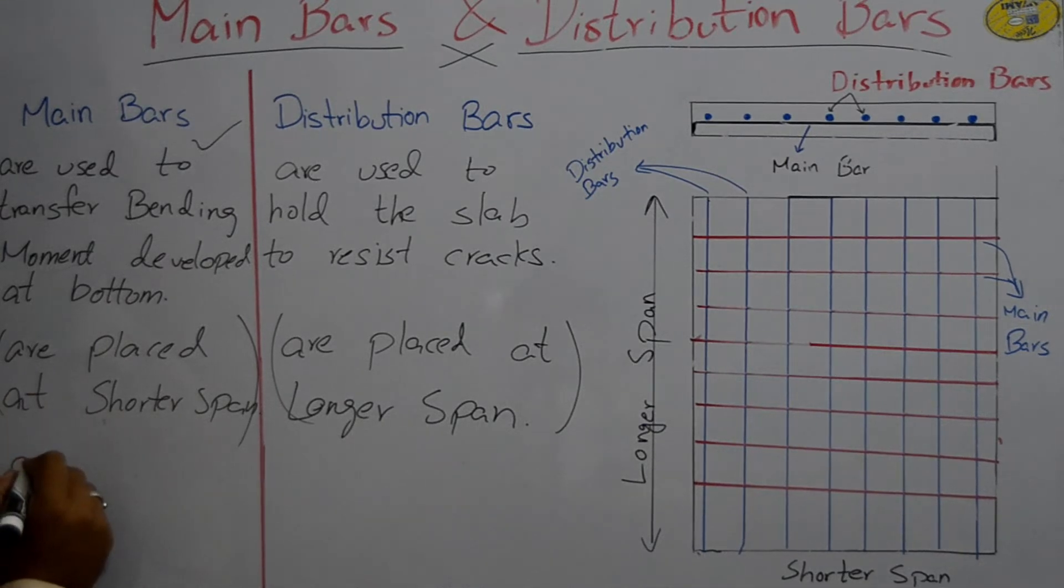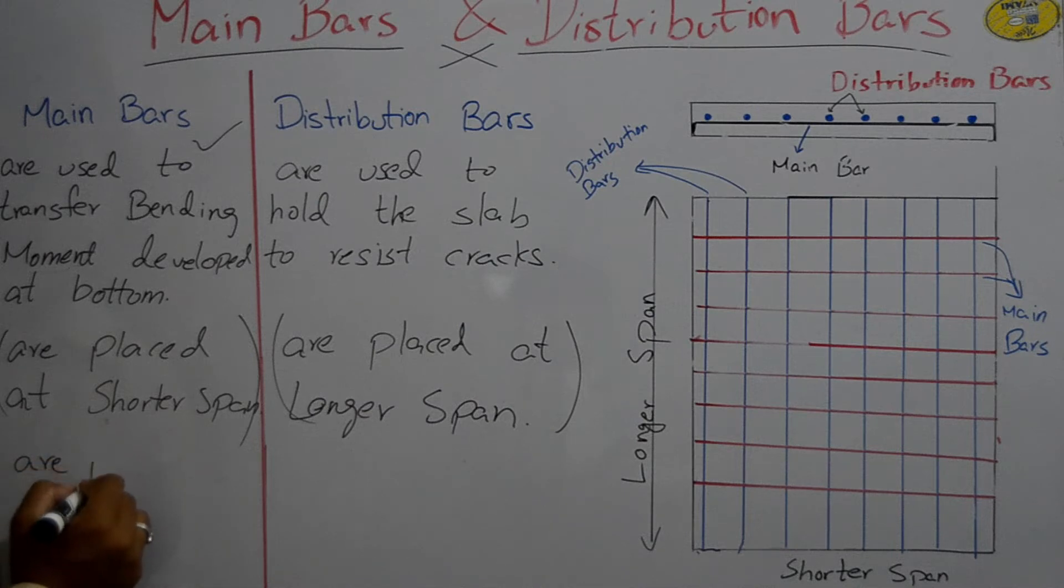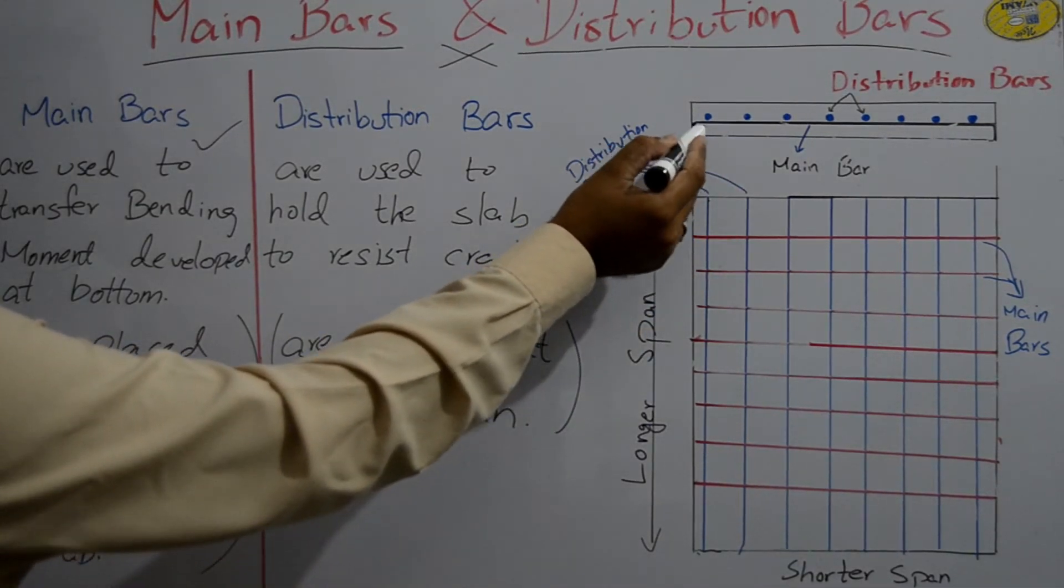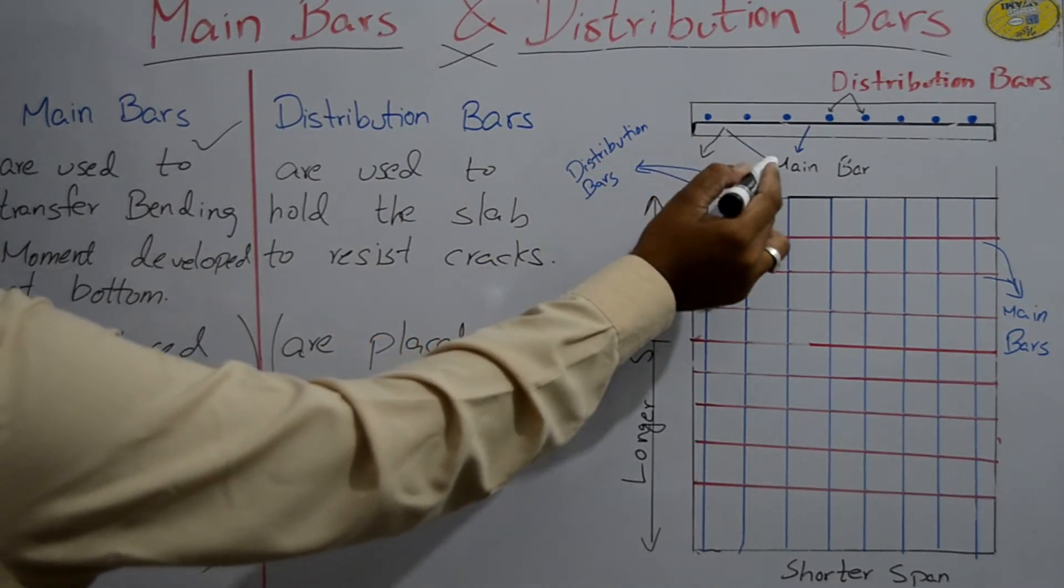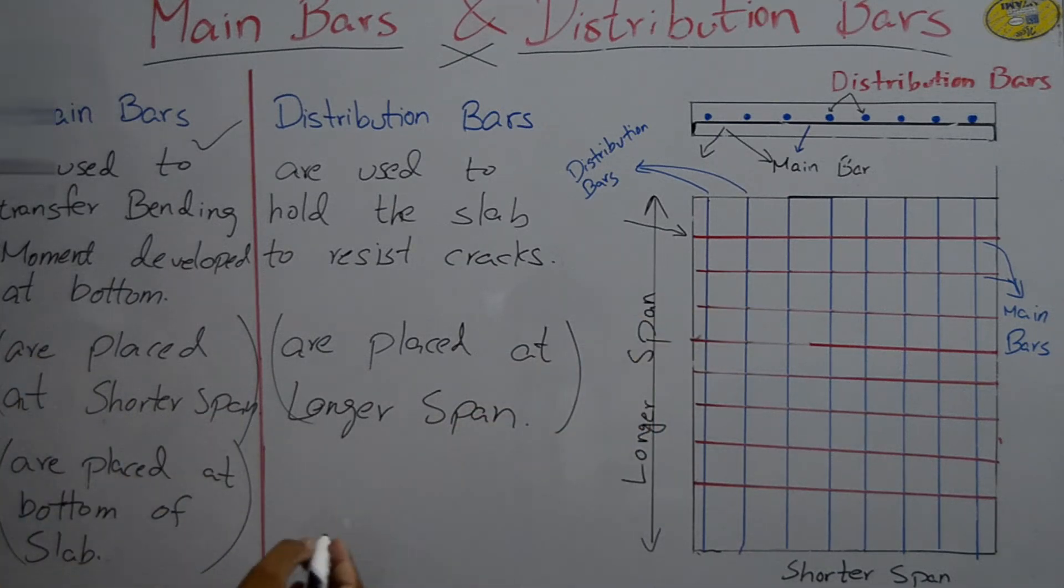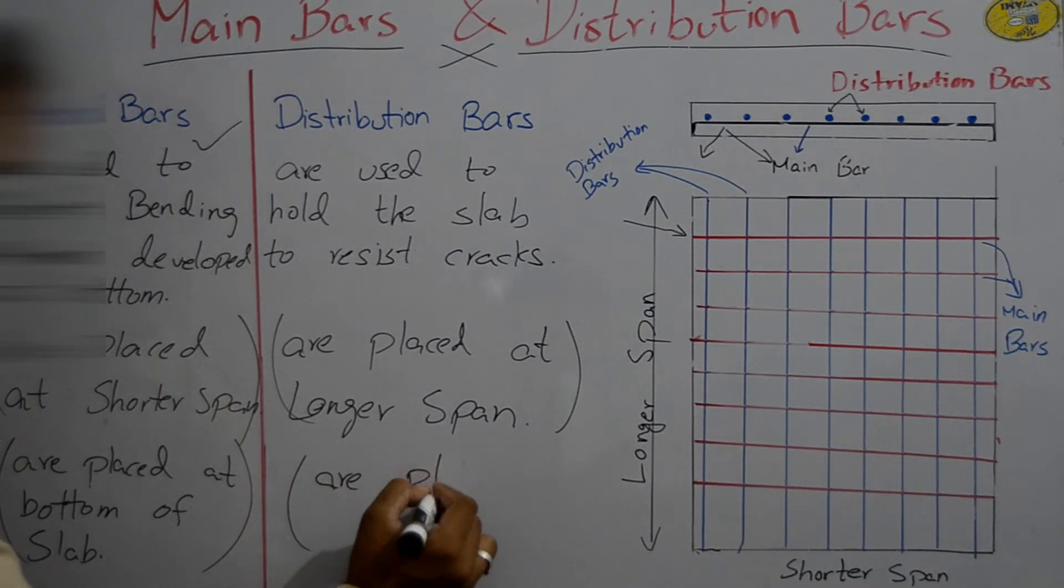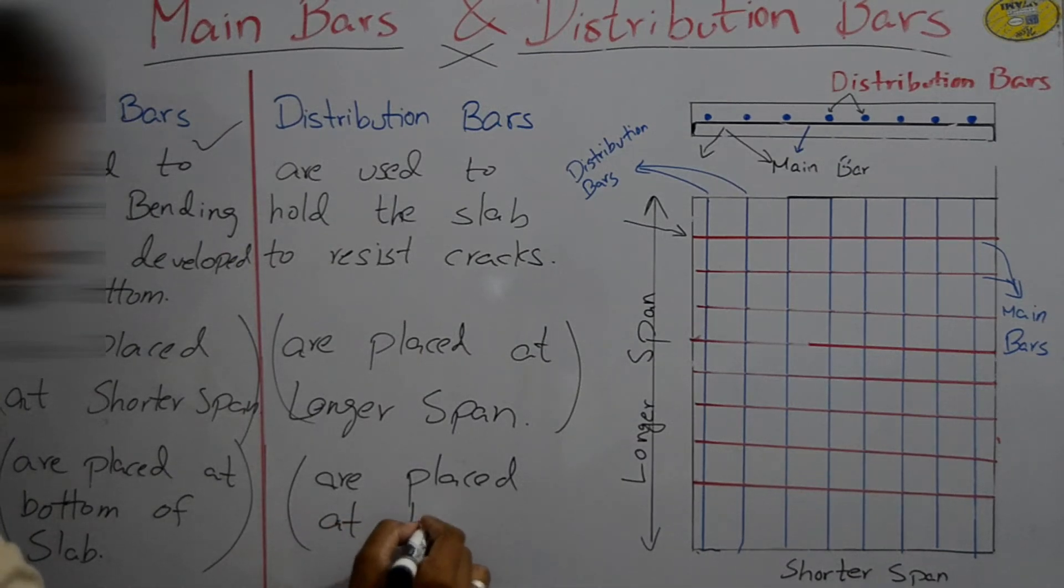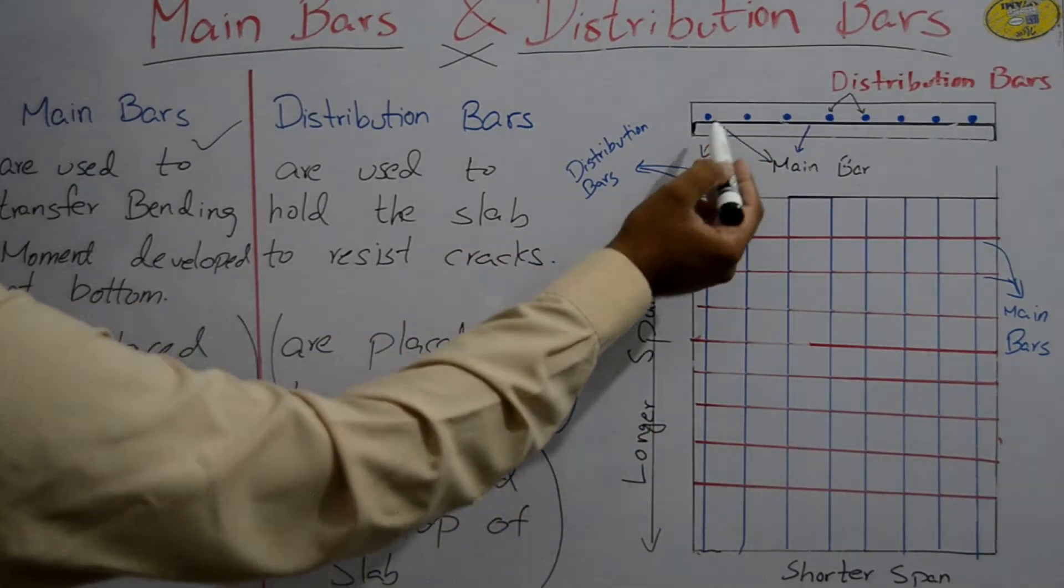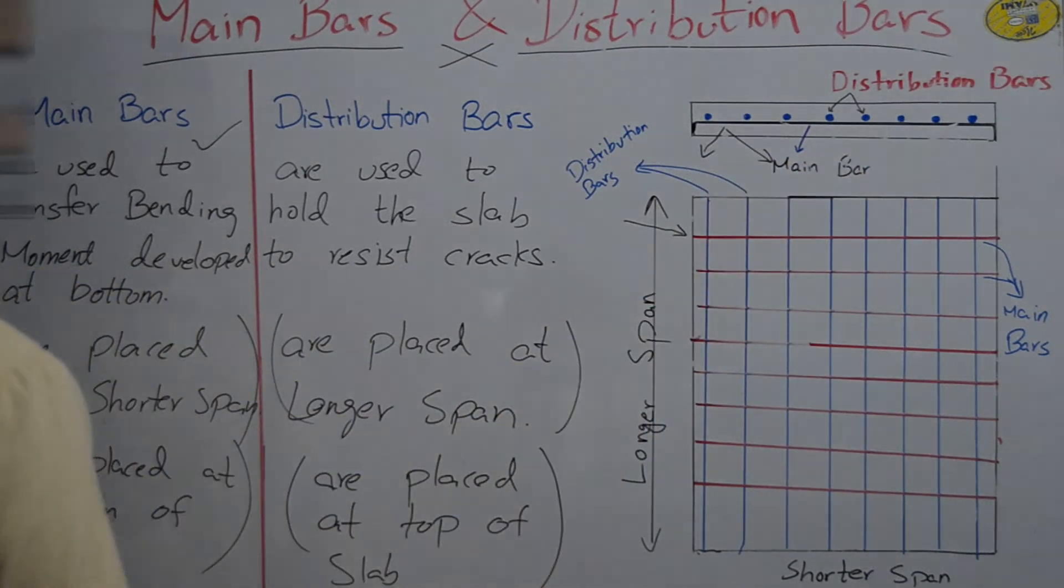Main bars are placed at bottom of slab. The main bars are placed at bottom of slab, as you are watching this. And distribution bars are placed at top of slab.